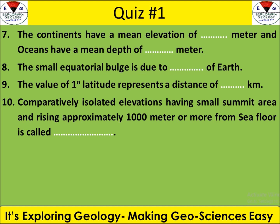The horizontal dimension is length, the vertical dimension is depth — tell the comparison and how different they are. What is the surface area of the Indian Ocean? Also, question number 7 asks about the mean elevation of continents and the mean depth of the ocean. Then, what is the equatorial bulge — the equatorial radius is bigger than the polar radius. When we change 1 degree of latitude, what is the distance in kilometers? Finally, an isolated elevated oceanic feature with a small summit approximately 1000 meters from the sea floor is asked.